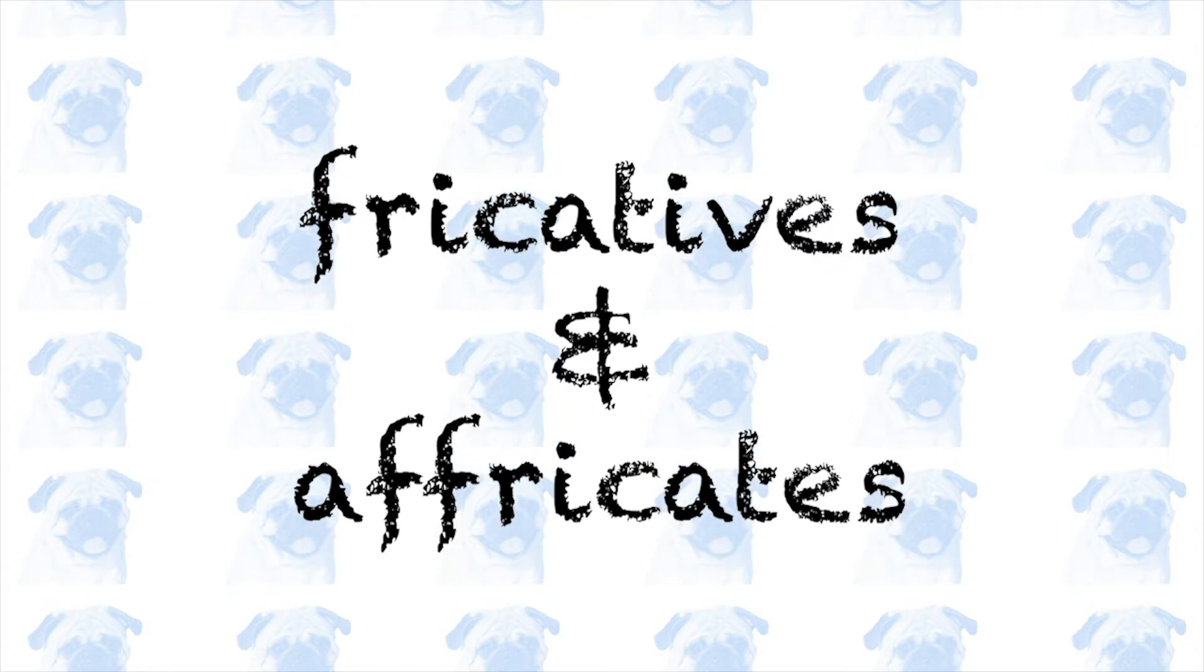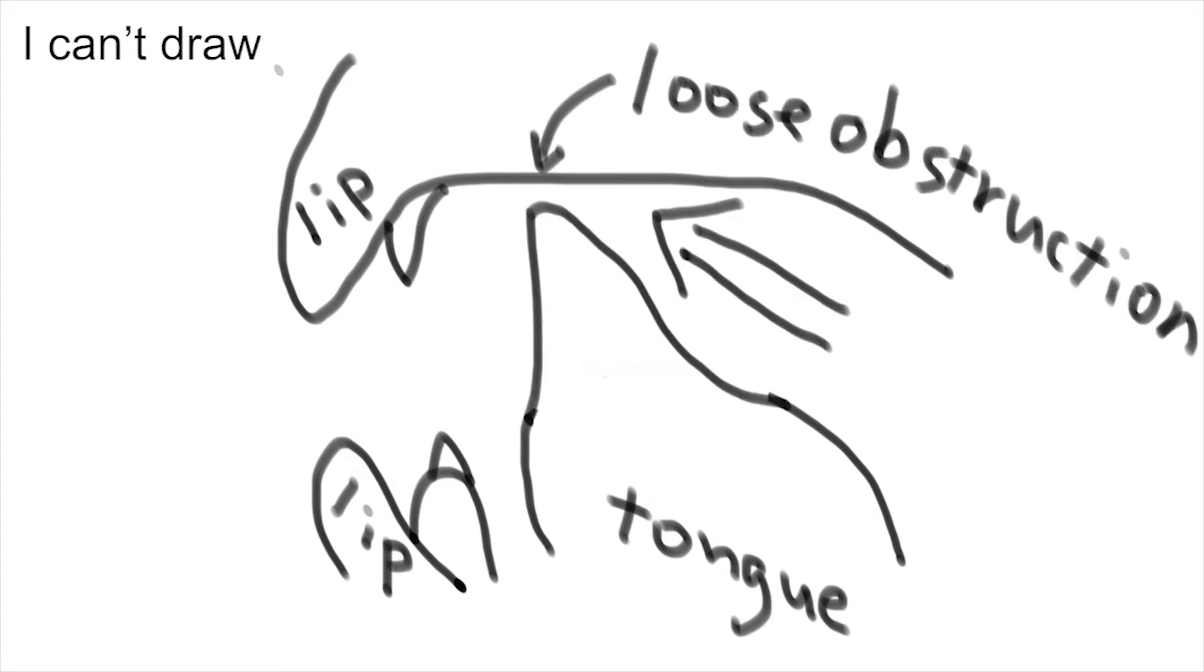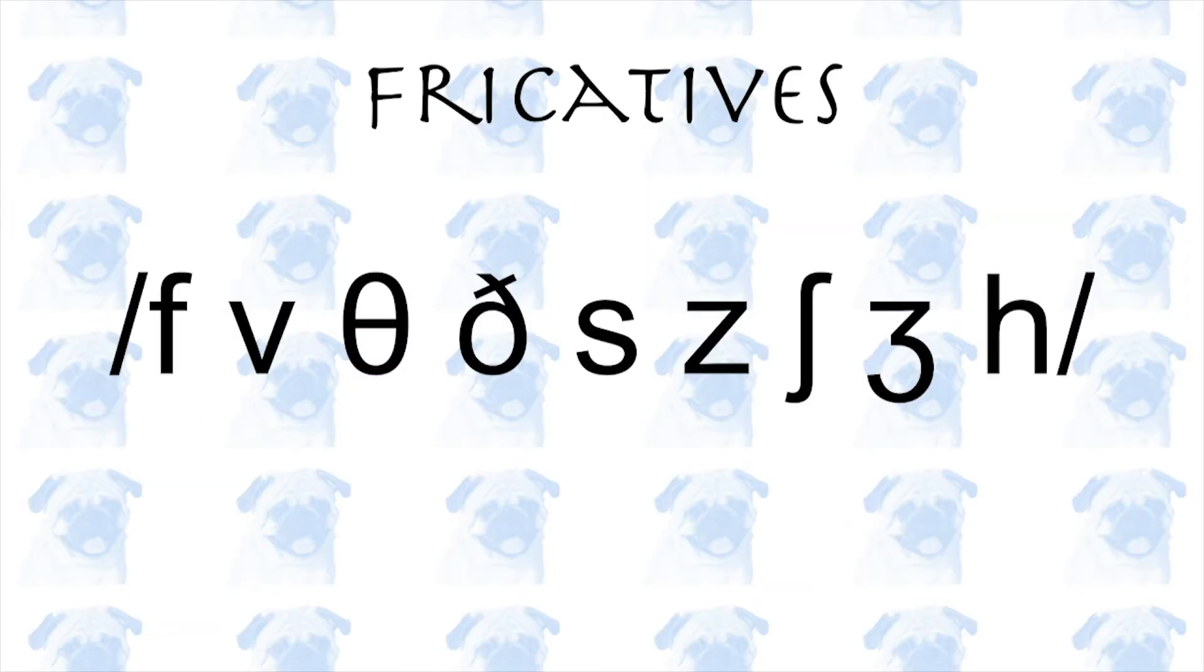What are fricatives and affricates? Firstly, fricatives are sounds that are made by creating a loose obstruction and then letting the airstream go through their obstruction. This usually results in a high-frequency hissing noise. In English, there are roughly 9 fricatives.